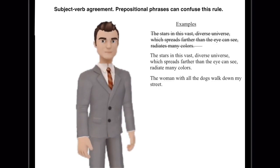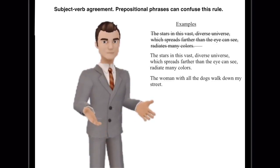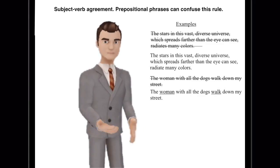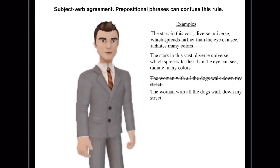Another example, the woman with all the dogs walk down the street. Our subject is woman, and then we need to identify the verb, which would be walk.